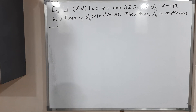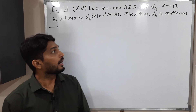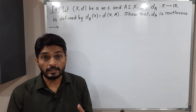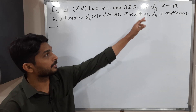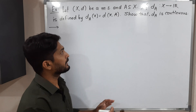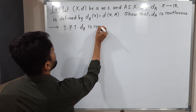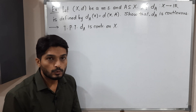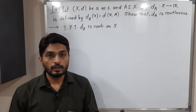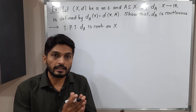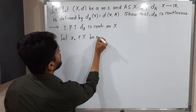In this video we are going to discuss this example. We have a metric space (X, d), A is a subset of X, and they have defined the function d_A from X to ℝ, which is nothing but the distance of any point from set A. We have to prove that d_A is continuous on the metric space (X, d). To prove d_A is continuous on X, we have to prove it is continuous at each and every point of X. So let us take any arbitrary point x₀ belonging to X.